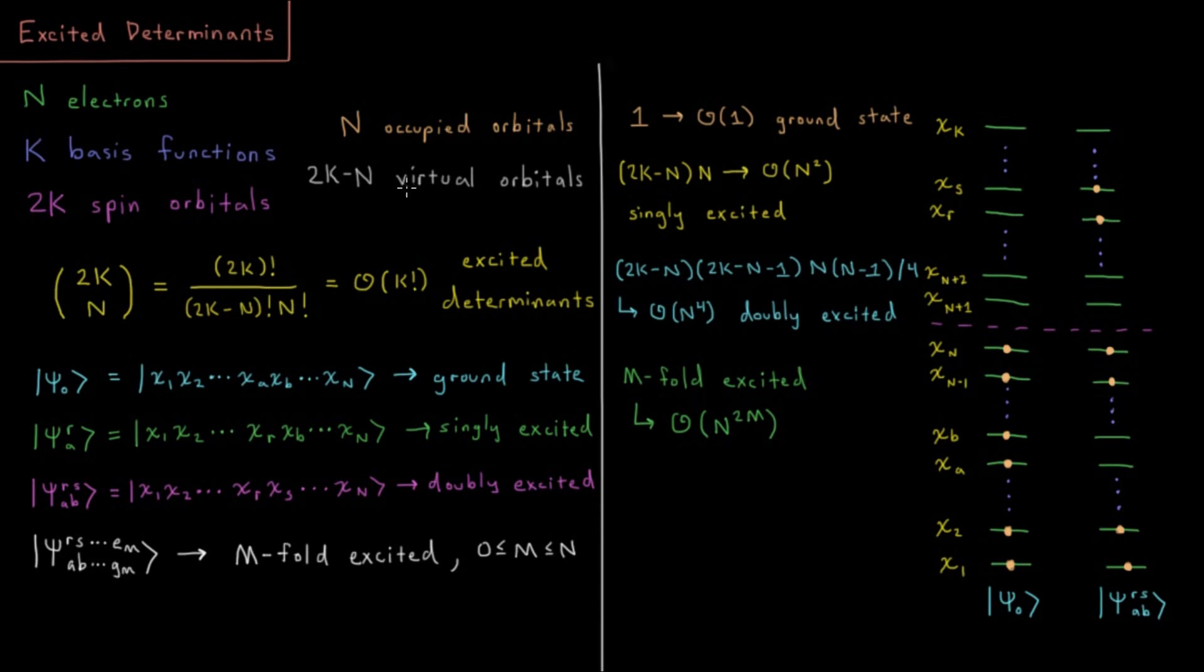So the question then arises, in the case where we start at the lowest energy available spin orbital and we put an electron there, and then we keep going up putting an electron in whatever lowest energy remaining orbital we have, that would be the Aufbau principle from general chemistry. If we follow that for every electron and then get to our nth electron, we would have what we call the ground state, or the lowest energy determinant possible.